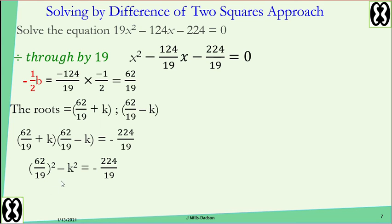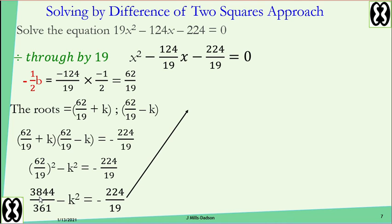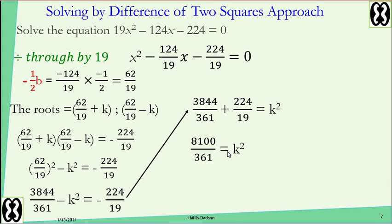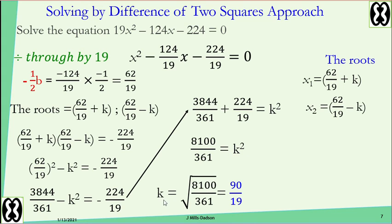Evaluate the expression. Add 224 over 19 to both sides and add k squared to both sides. Simplify, then find the square root on both sides. k equals 90 over 19.